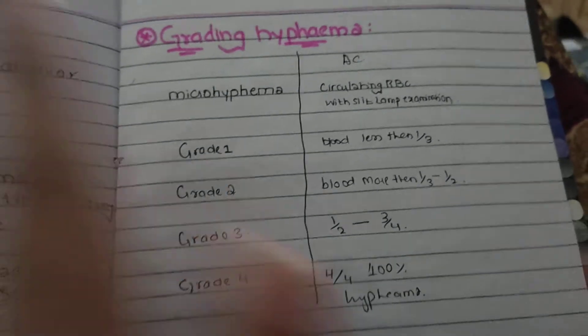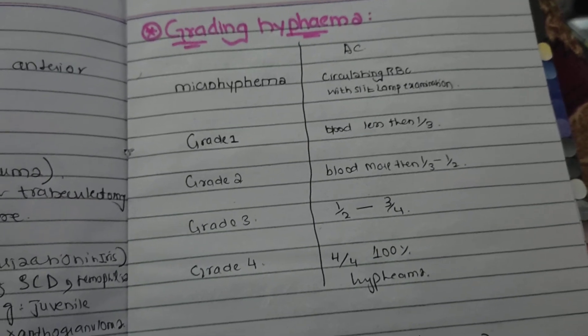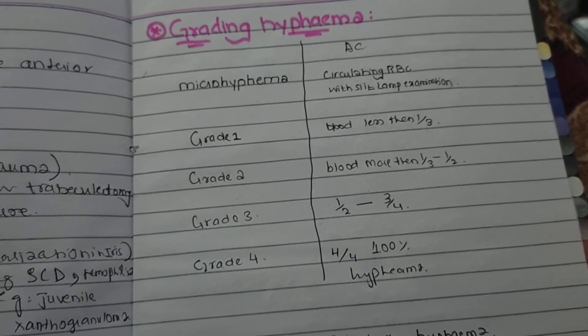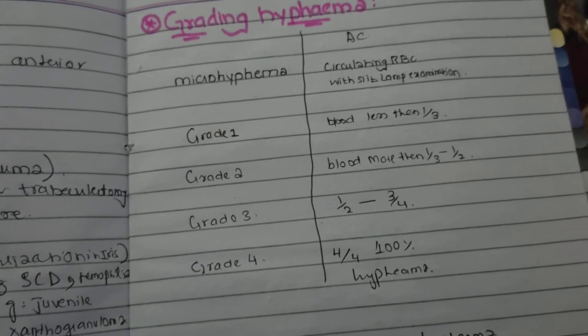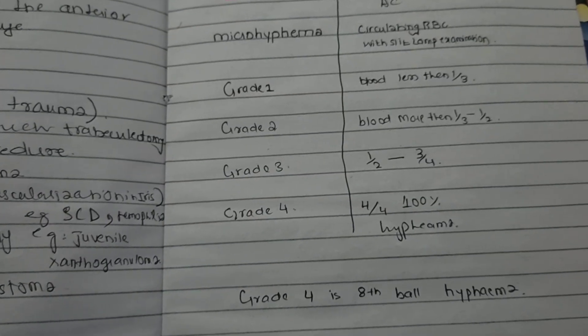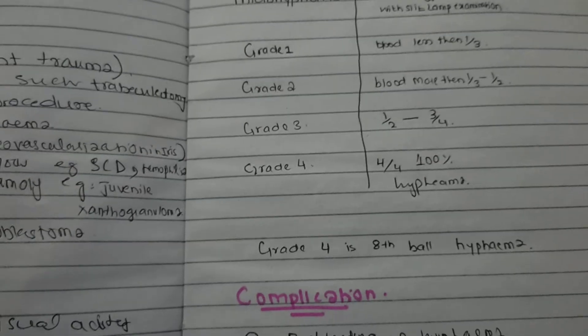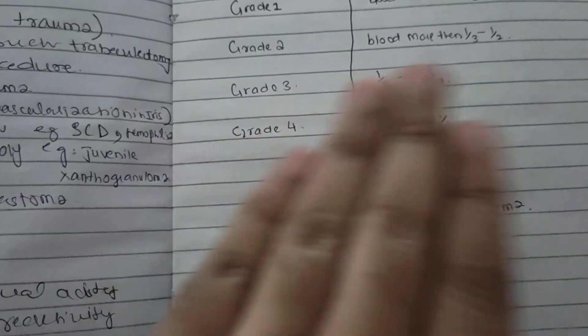Now let's look at the grading of hyphema. First we have micro-hyphema, where there are just circulating red blood cells in the interior chamber. After this, Grade 1 has one-third of the interior chamber filled with blood. Grade 2 has one-third to one-half filled. Grade 3 is filled three-quarters. Grade 4 the whole chamber is filled.